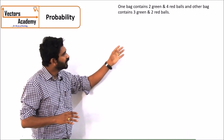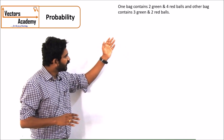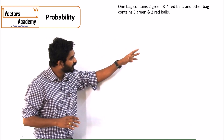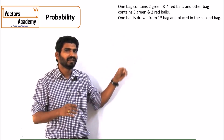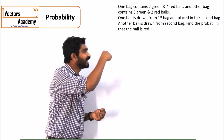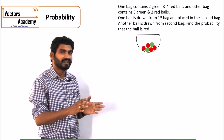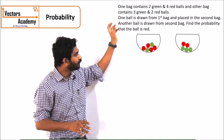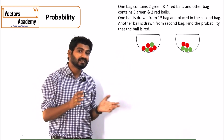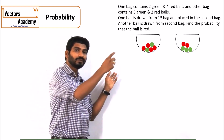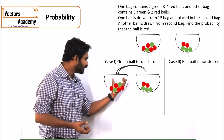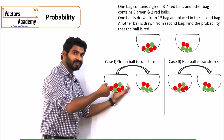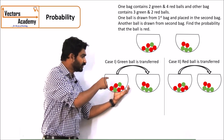Now we will consider a more complex question. There are 2 bags: the first contains 2 green and 4 red balls, and the second contains 3 green and 2 red balls. One ball is selected from the first bag and put into the second bag. There are 2 cases: the ball transferred could be green or red. In the first case, if a green ball is selected, the probability of selecting green from the first bag is 2 by 6.